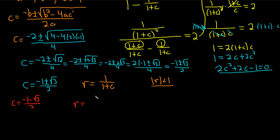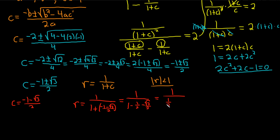Let's plug c = (−1 − √3)/2 into r. So r = 1 over (1 + (−1 − √3)/2). This simplifies: 1 minus 1/2 minus √3/2 = 1/2 minus √3/2. So r = 1 over ((1 − √3)/2), which equals 2 over (1 − √3). Putting this in the calculator: 2 divided by (1 − √3) gives approximately −2.73. That's not going to be any good — r is not less than 1 in absolute value. So this value does not work.